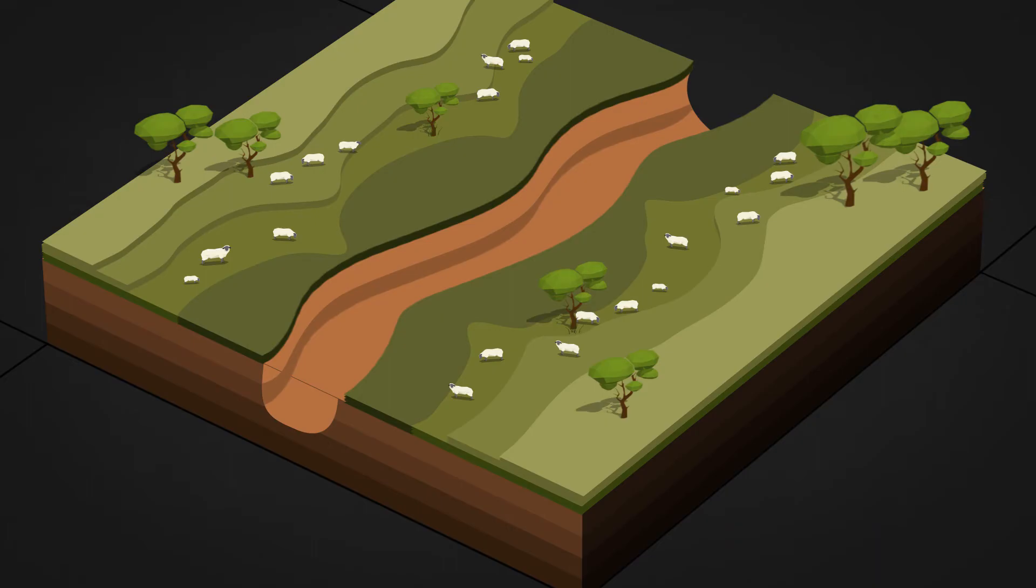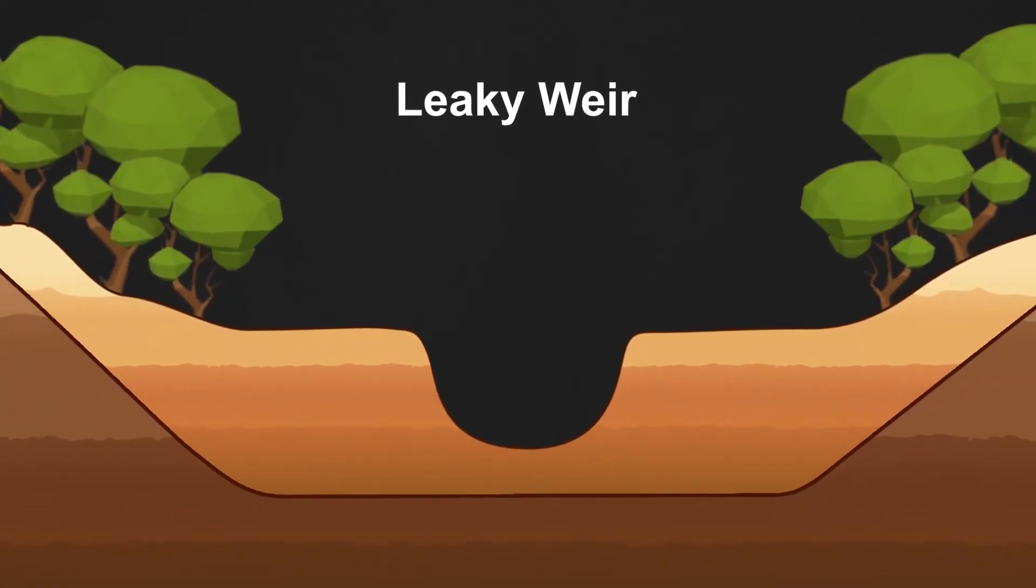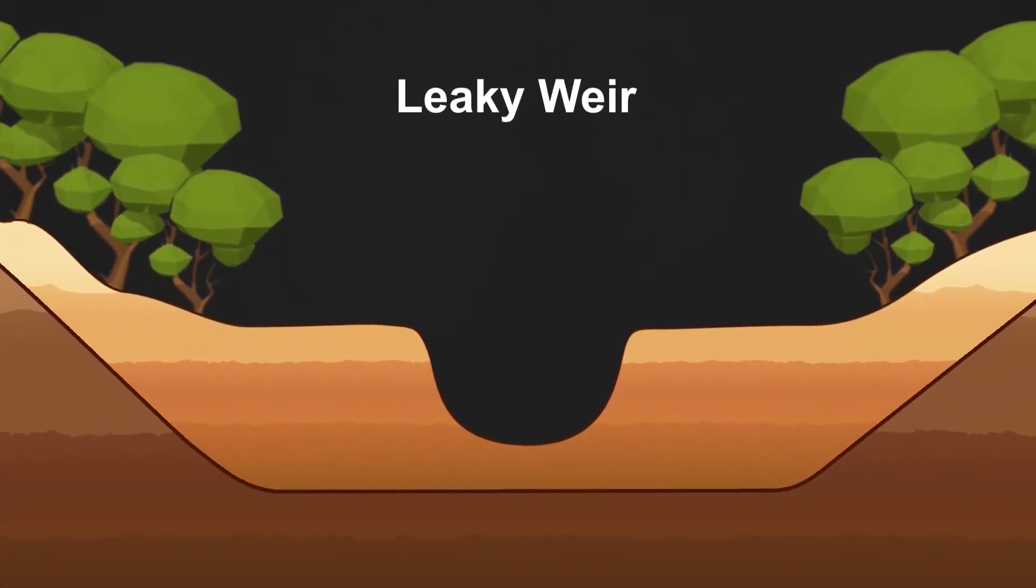At the Mulloon Institute we strive to restore landscape function. We carefully plan and design structures to fit neatly into the landscape. One example is the leaky weir.